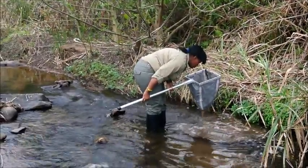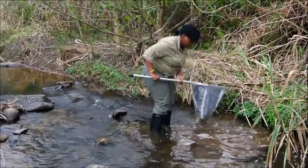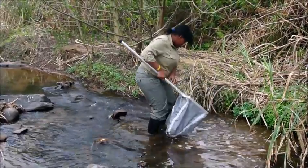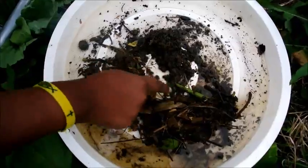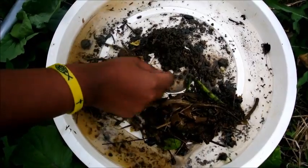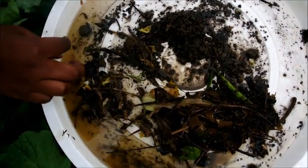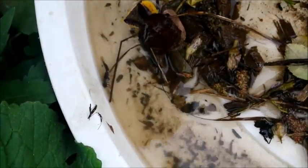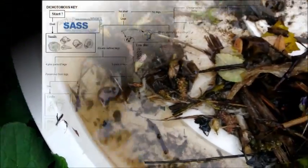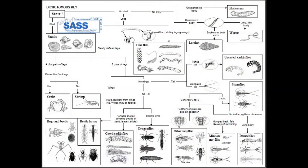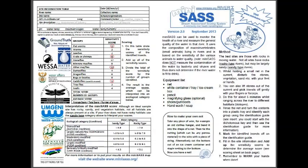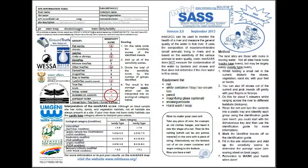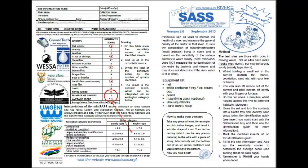Anyone can learn how to collect a MiniSAS sample on a river. All you need is a net, a white tray, and gumboots if you have. Go into your river and use your net to collect bugs within the sand, stones, and submerged vegetation of the river for 5 minutes. In a white tray, the collected bugs are then identified using the MiniSAS identification guides. Different bug groups have different MiniSAS scores, with the final score translated into the river's ecological category.